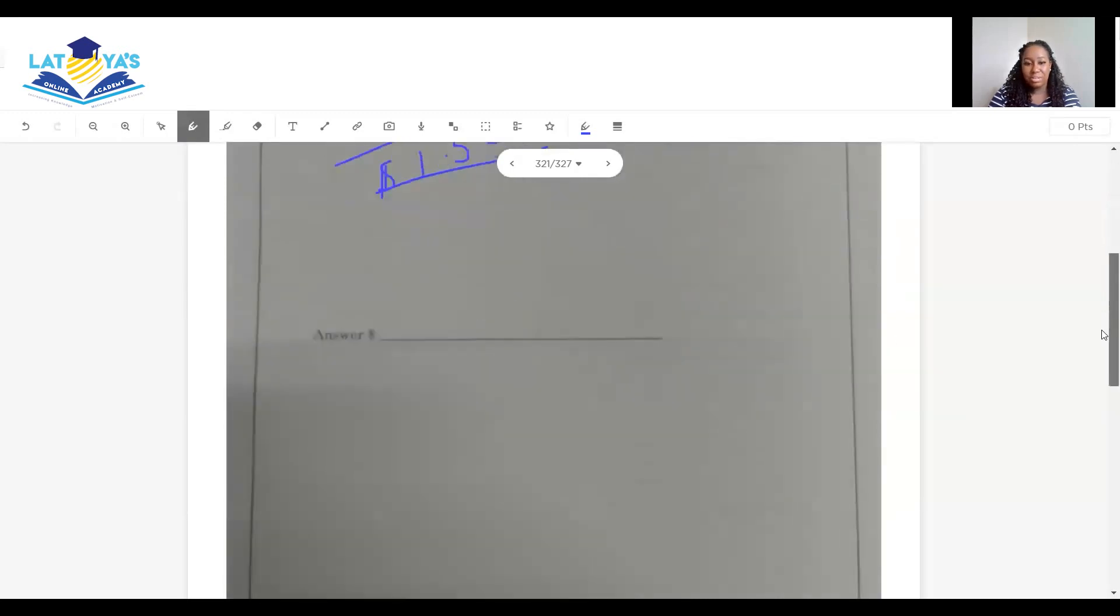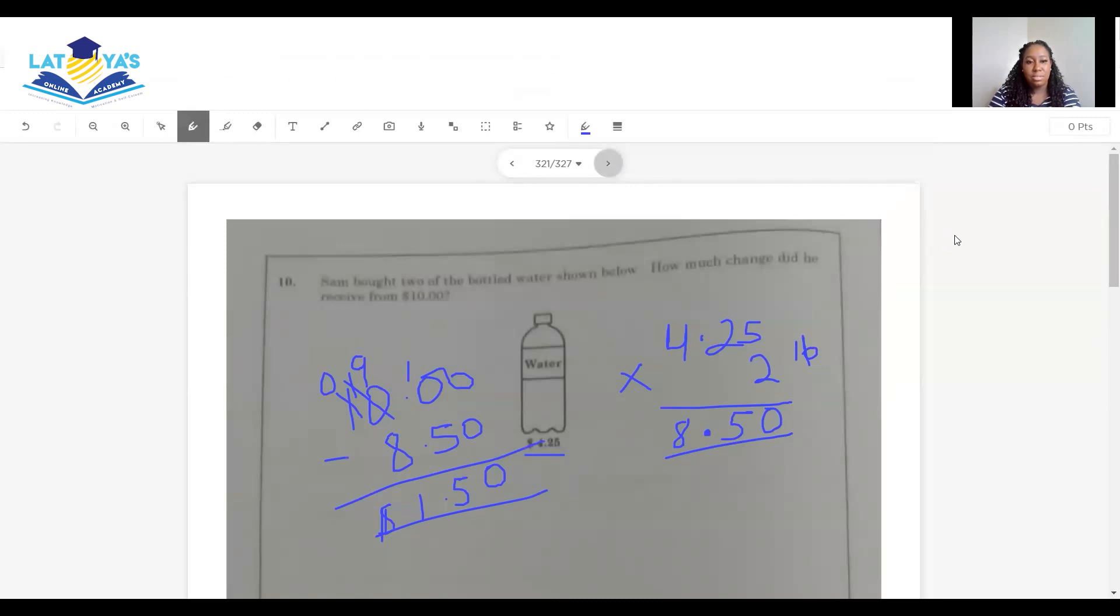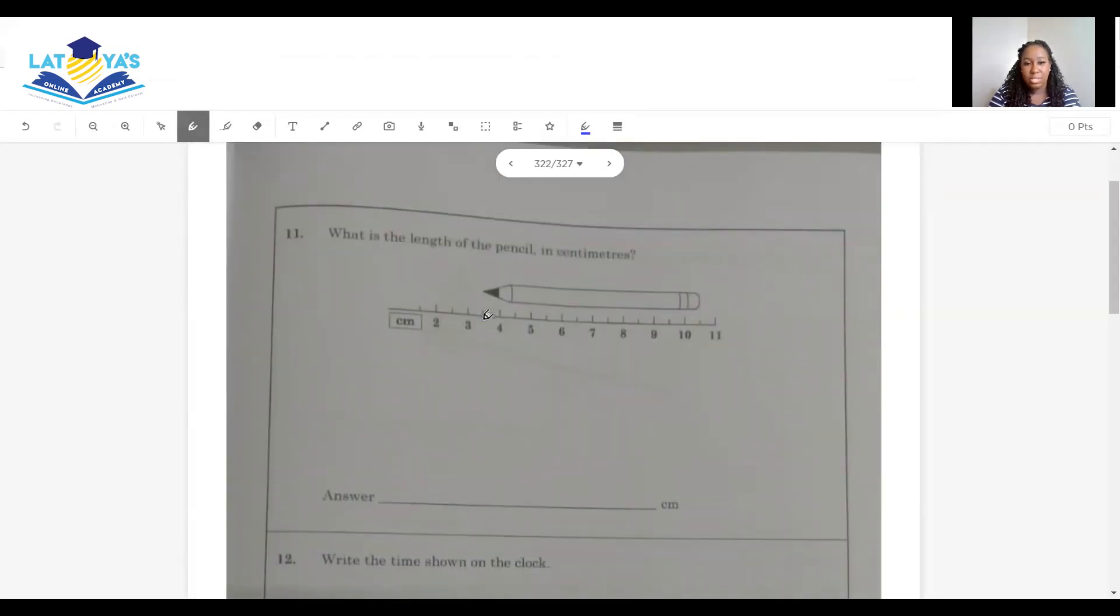Question 11. So we see where it starts here, and it ends here. So from 4 to 5 is one. Here is two. Here is three. Here is four. Here is five. Here is six. Here we have a half and a half, which is going to give me a whole. So the length of this pencil is 7 centimeters.